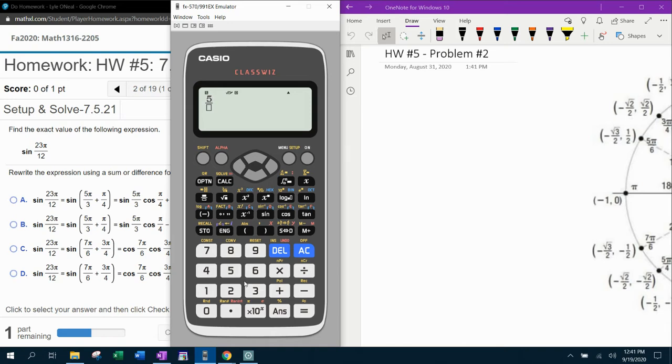So first we want to check 5π over 3 plus π over 4. And that is 23π over 12. So those answer choice A and B are possible.